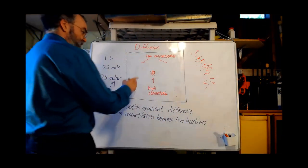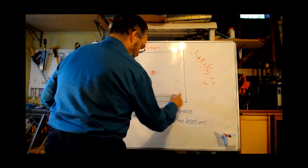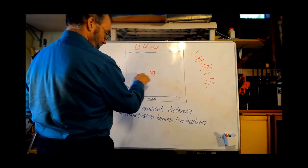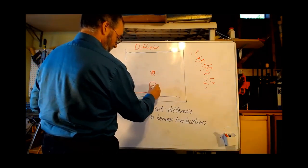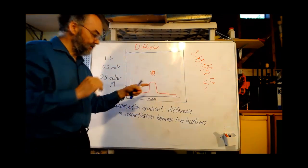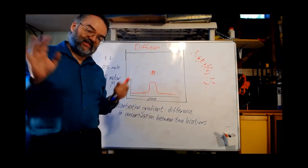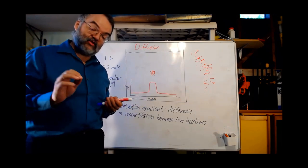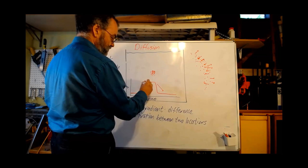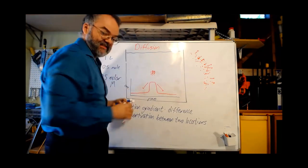If I draw a graph of place versus concentration, I would see it's low here, high here, and low here — so there's a concentration gradient between the center and the outer spots. Diffusion is the tendency for things to move down their concentration gradient, from where it's high to where it's low. These molecules over time will tend to move from where there's more of them to where there's less — in other words, they'll spread out.